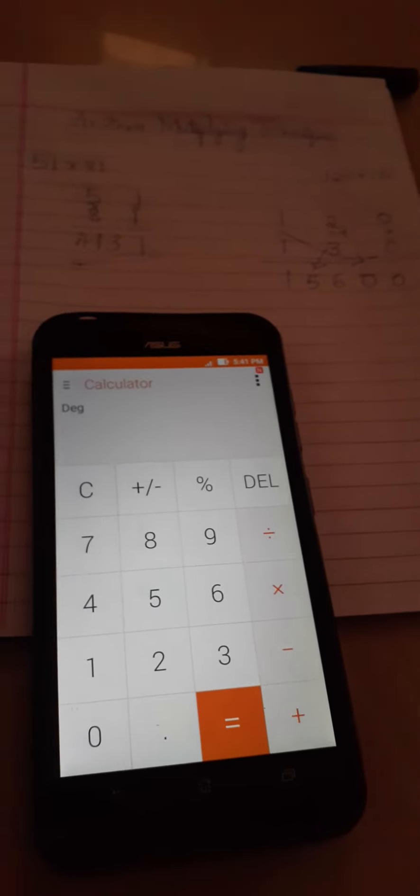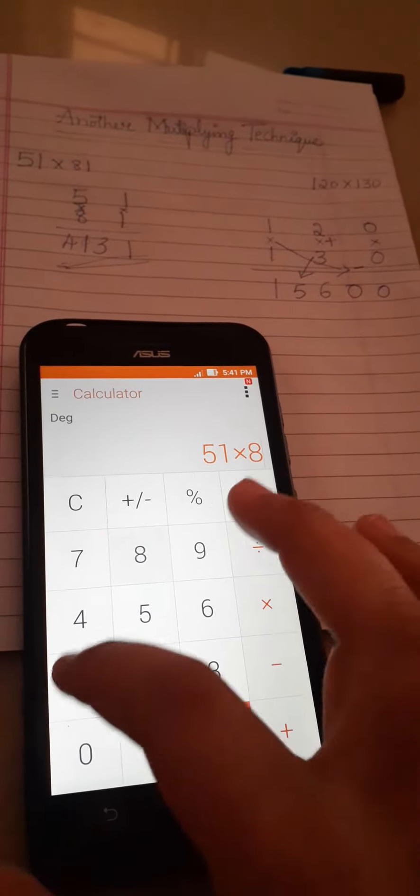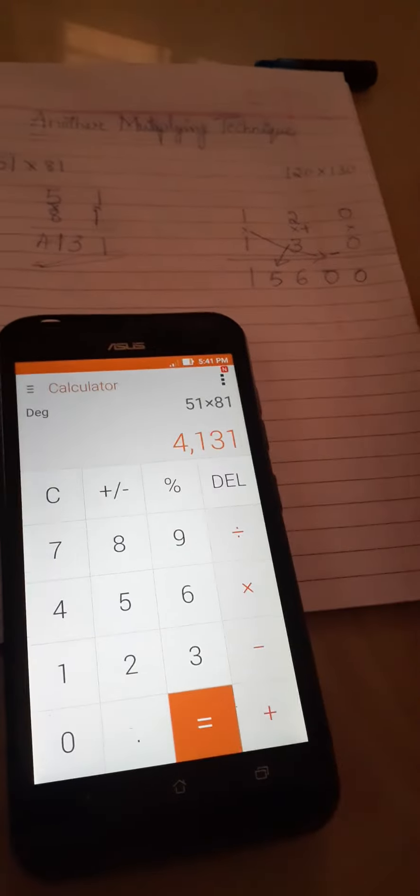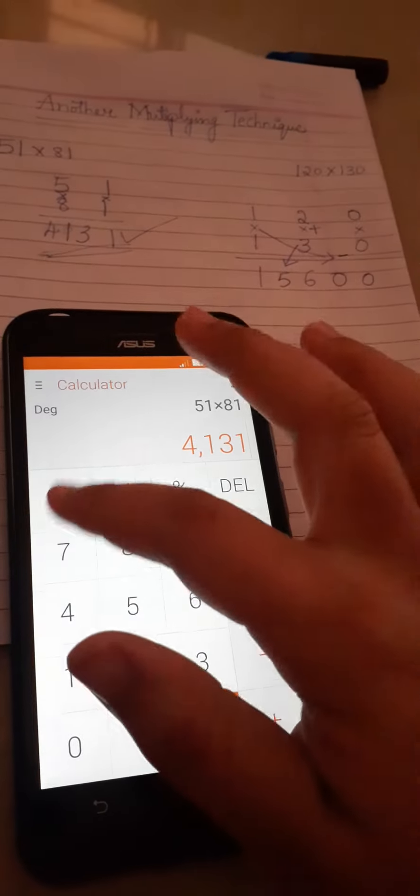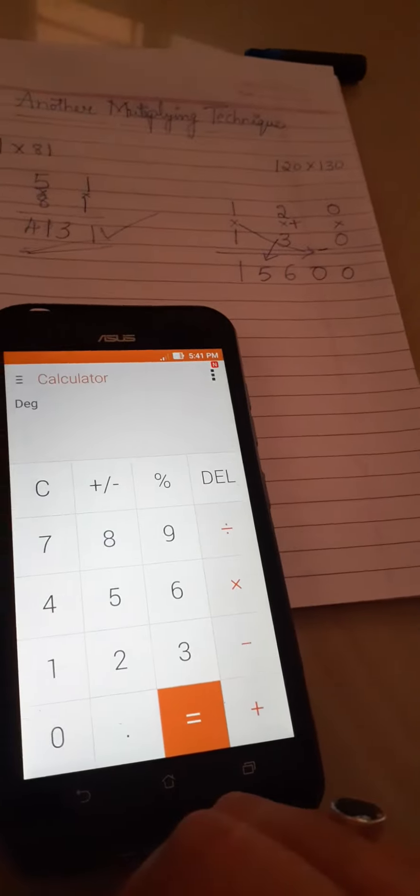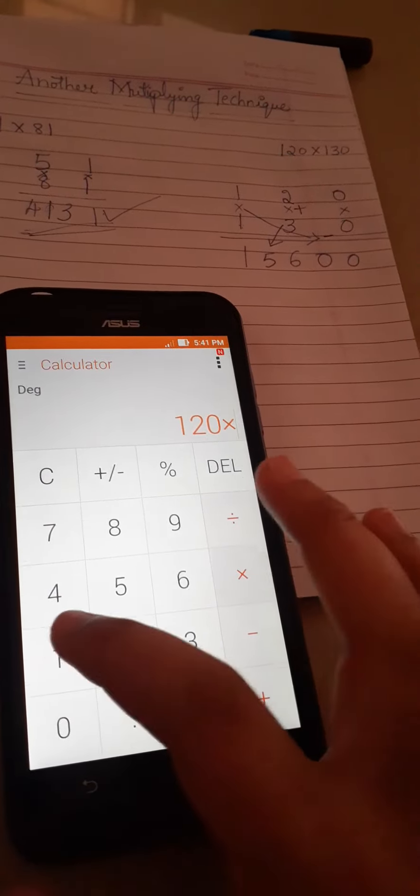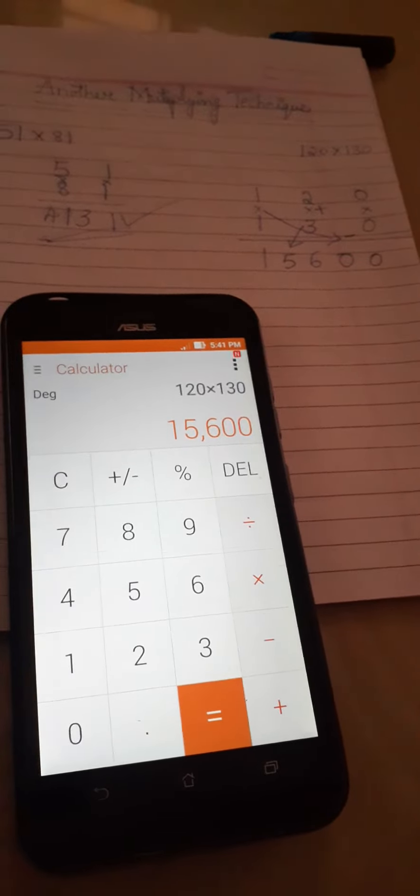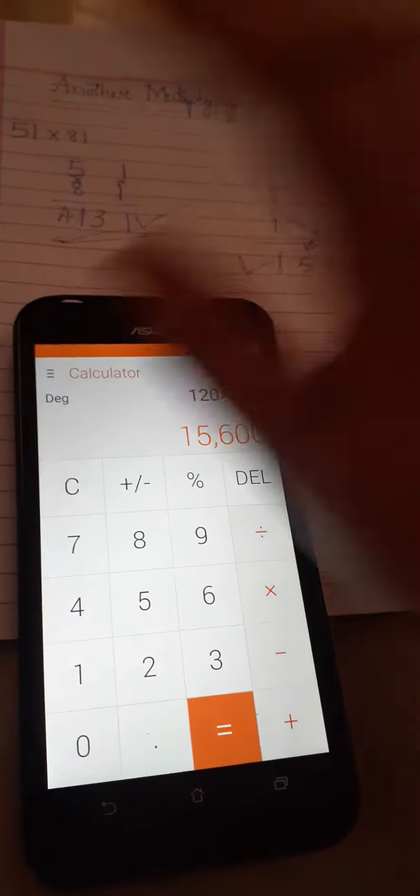Let's make a cross verification guys. 51 multiplied by 81 is equal to 4131, and we have also calculated right. And the next is 120 multiplied by 130, it's 15600. So this is also right.